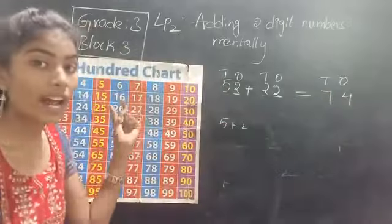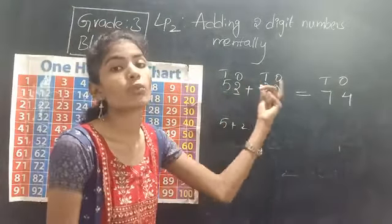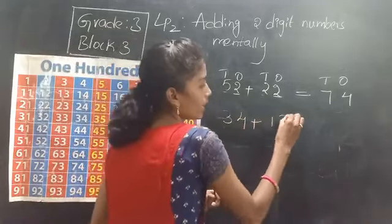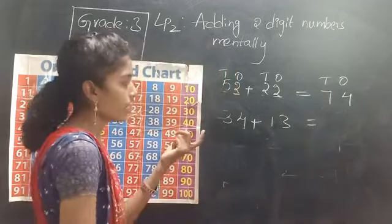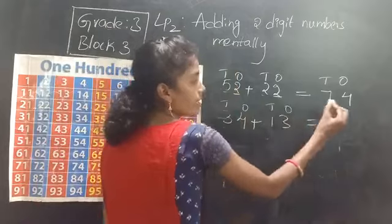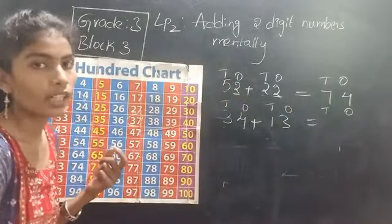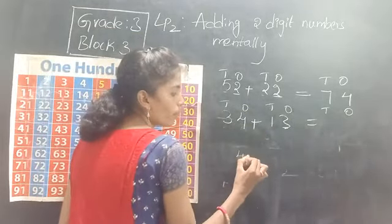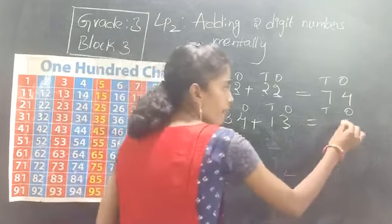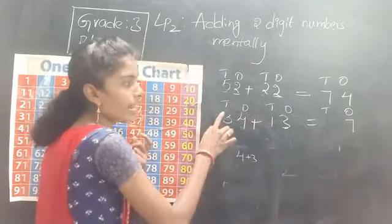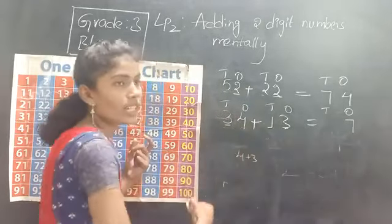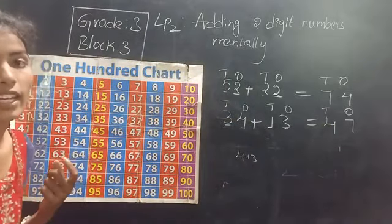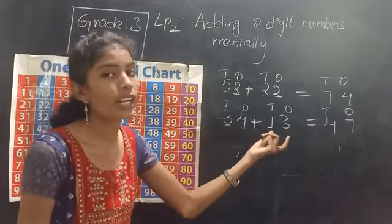Without using the 100 chart, add numbers mentally by adding 1s with 1s and 10s with 10s. One more example: 34 plus 13. The 1s: 4 plus 3 is 7. The 10s: 3 plus 1 is 4. So 47 is the answer when adding 34 and 13.